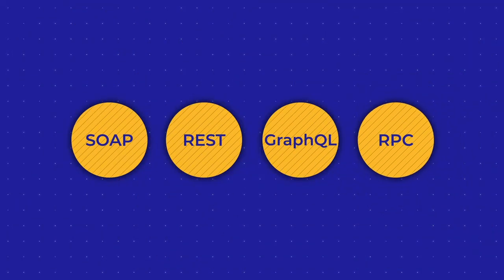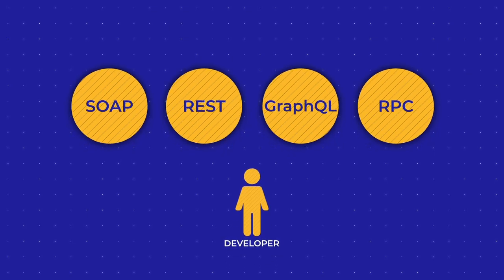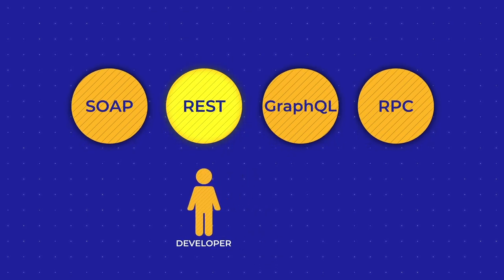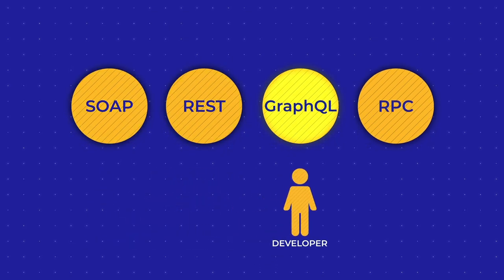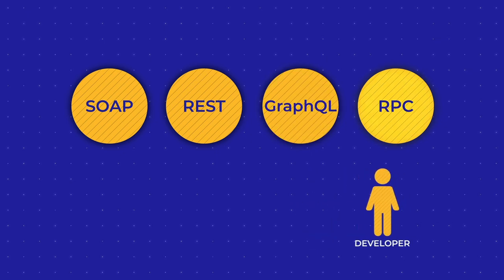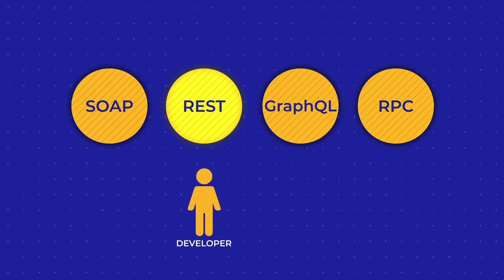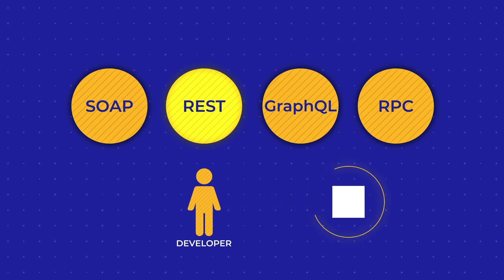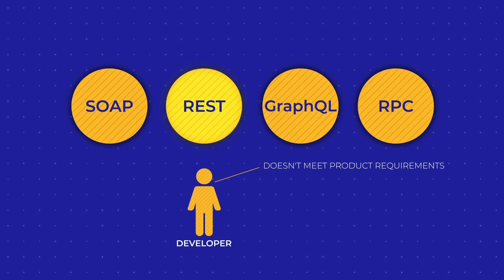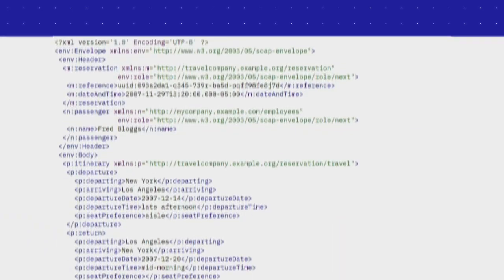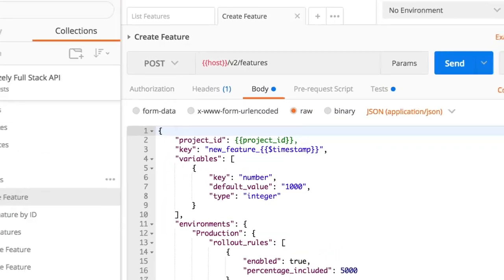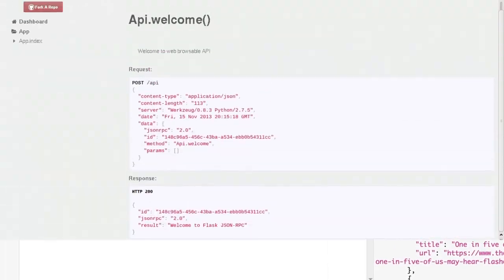An application programming interface comes in different forms. When developers get down to building a web API, first they decide which specification to use. Most of the time they go for REST. But analyzing their product requirements, a tech team can come to the conclusion that the solution calls for another approach. In this video, we're going to review the four major web APIs that support communication between clients and servers.